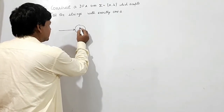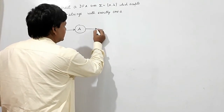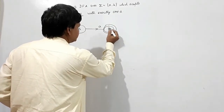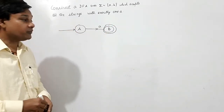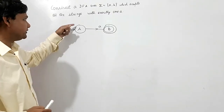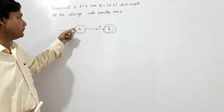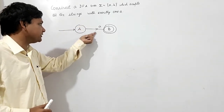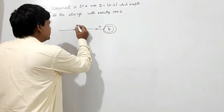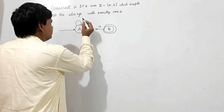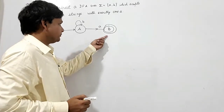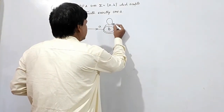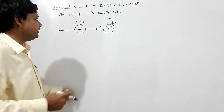If the start state gets A, it contains A, which means it should be accepted. At B, if I take a self-loop here, it is not in the final state. But when it takes A, it will be reaching the final state. So I will take B here, and if I take B again, it will be in the final state because it will be containing only one A.